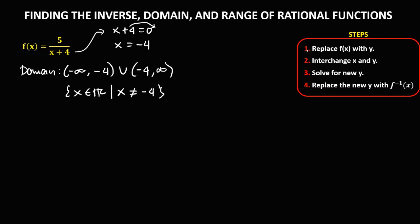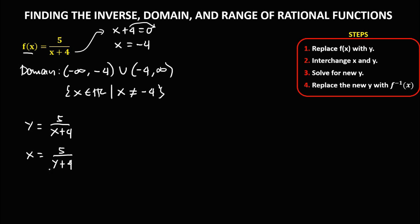To find the inverse, replace f of x with y: y equals 5 over x plus 4. Then interchange x and y, so x equals 5 over y plus 4. Then to solve for y, cross multiply: x times y plus 4 equals 1 times 5, which gives 5.